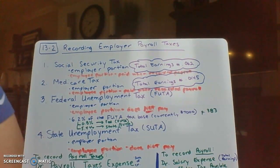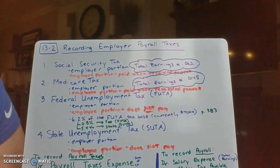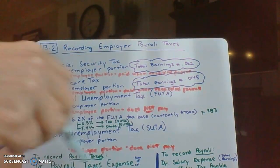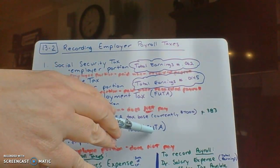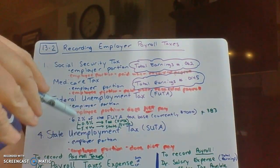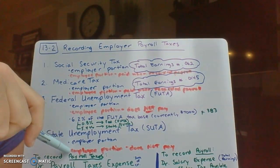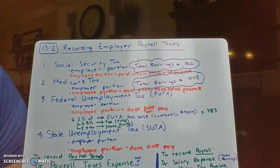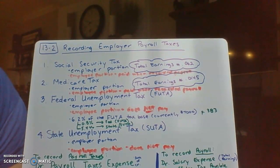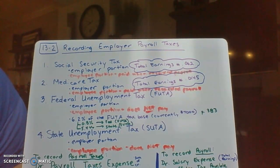The next two are more difficult to conceptualize: the federal unemployment tax, called FUTA, and the state unemployment tax, called SUTA. Importantly, the employee — as we covered in Chapter 12 — does NOT pay FUTA or SUTA. They don't have to put money into an account in case they get laid off. Only the employer does.